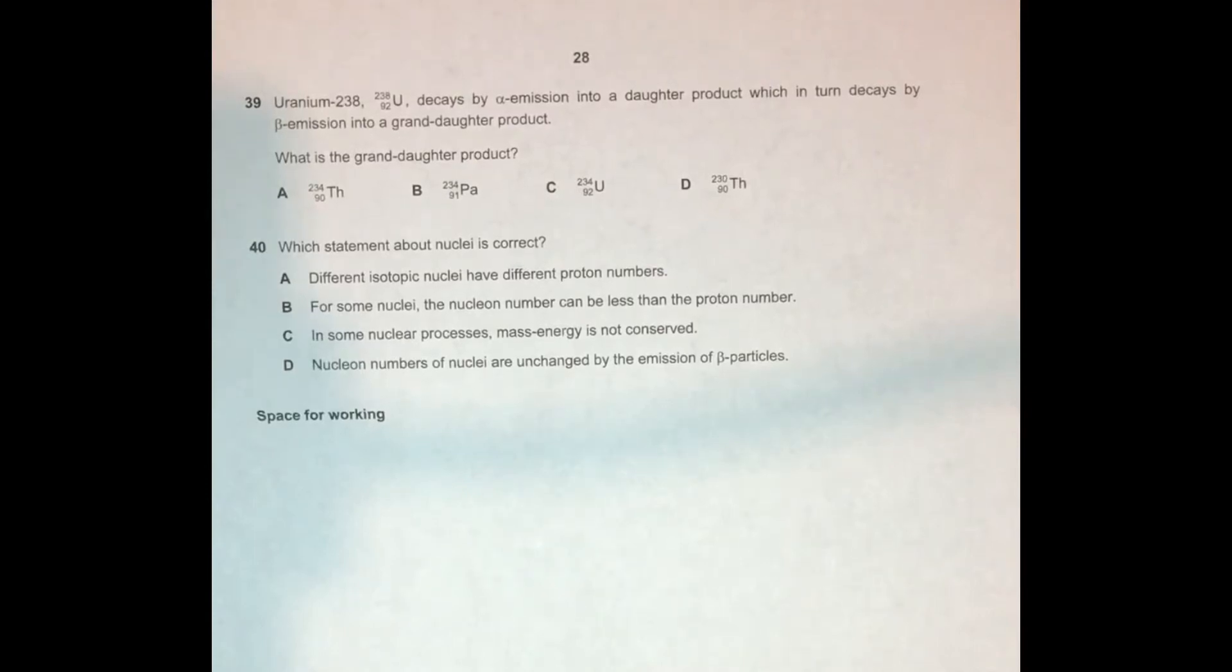In this video, I'll be going over a few worked examples related to the learning outcome showing an understanding of the nature and properties of alpha, beta, and gamma radiations. These questions come from AS Physics Syllabus Code 9702, paper 11 from May/June 2011, questions 39 and 40. We'll start with question 39.